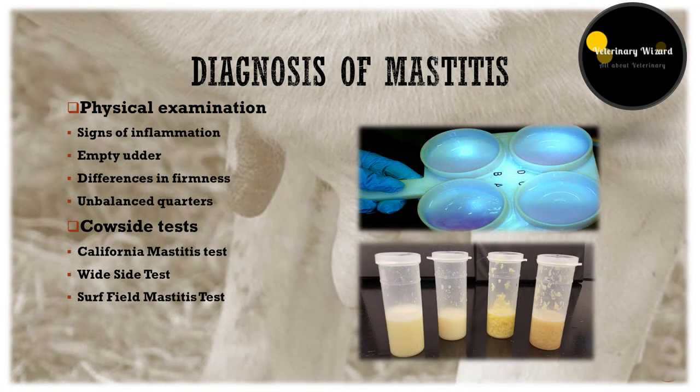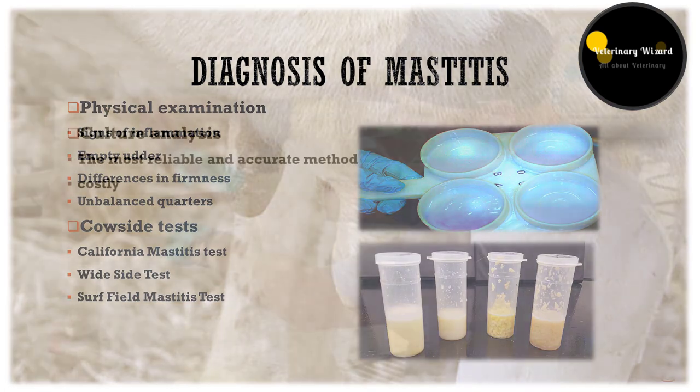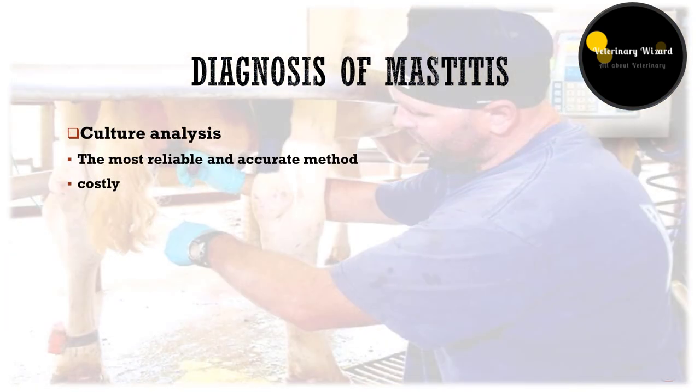We can diagnose mastitis by physical examination, cow-side tests, and culture analysis. In physical examination there will be signs of inflammation, empty udder, differences in firmness, and unbalanced quarters. For cow-side tests you can perform the California Mastitis Test, Whiteside Test, and Surf Field Mastitis Test. Culture analysis is the most reliable and accurate method but it is costly.